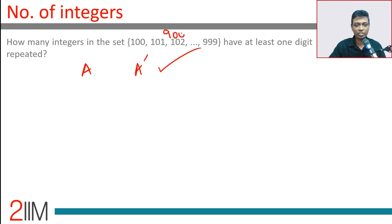There are 900 numbers in this set that we should know. Now, we want to find the number of numbers where no two digits are same.